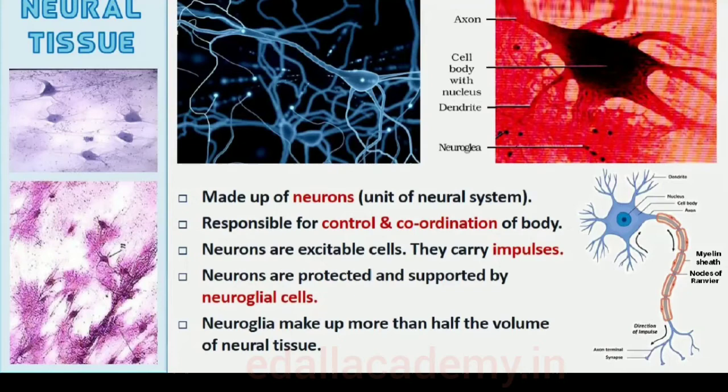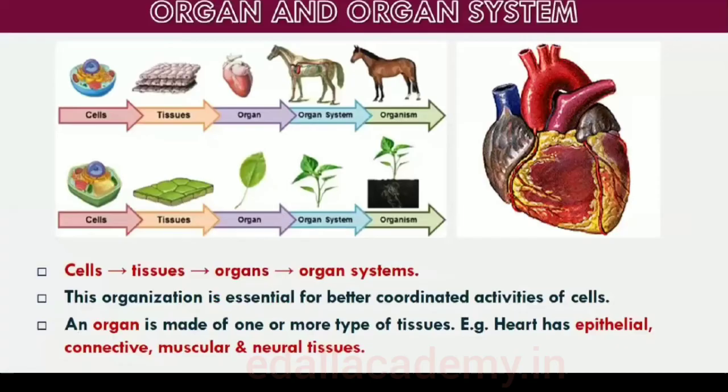7.2 Organ and Organ System. The basic tissues organize to form organs which in turn associate to form organ systems in multicellular organisms. Such an organization is essential for more efficient and better coordinated activities of millions of cells constituting an organism. Each organ in our body is made of one or more types of tissues. For example, our heart consists of all the four types of tissues: epithelial, connective, muscular and neural.